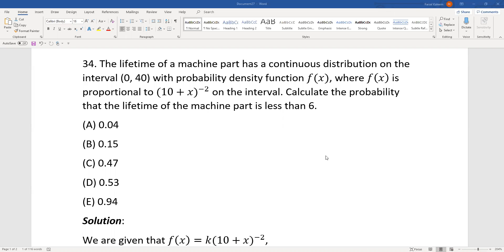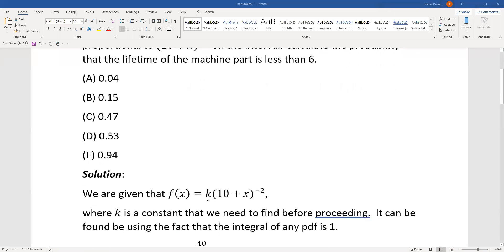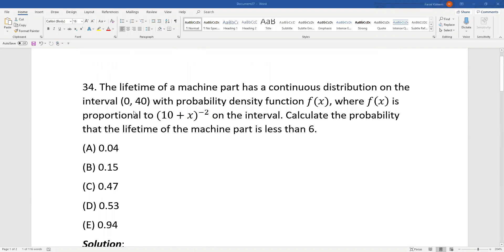Since the pdf is proportional to (10+x)^(-2), it means it's equal to some constant k times (10+x)^(-2). k can be found by using the fact that any pdf integrates to 1 over its entire interval. Here the interval is 0 through 40.